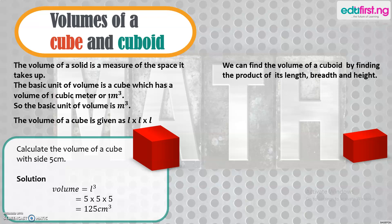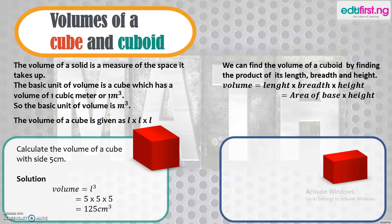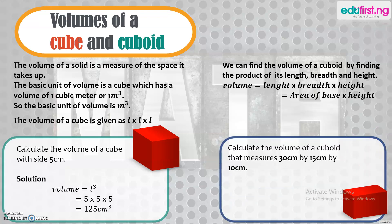We can also find the volume of a cuboid by finding the product of its length, breadth and height. Once we have the length, breadth and height, we multiply them to get the volume. You can also express this as area of base times height. Example: calculate the volume of a cuboid that measures 30 cm by 15 cm by 10 cm. Solution: volume = L × B × H, which gives us 4,500 cm³.